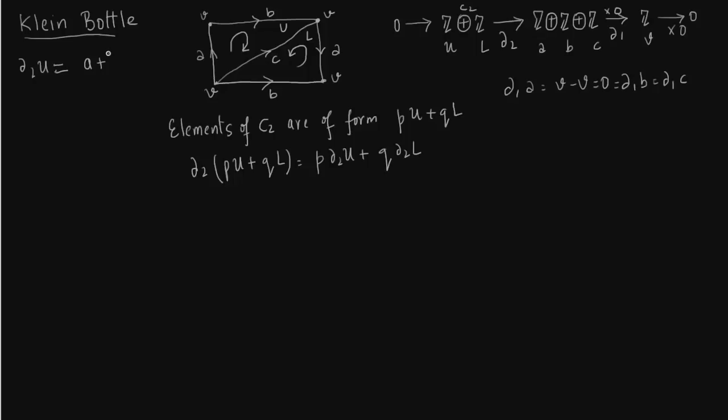So now we have to take orientation into account. A and B are in the same direction as orientation. C is in the opposite direction. So A plus B minus C.